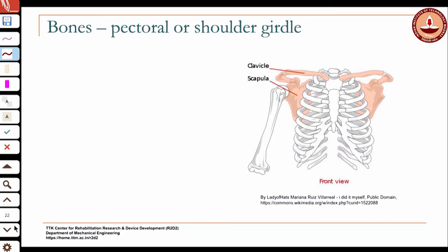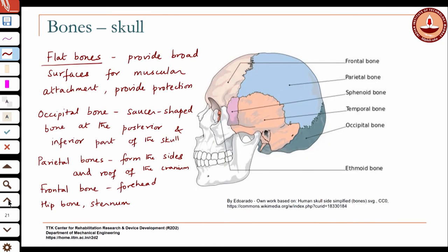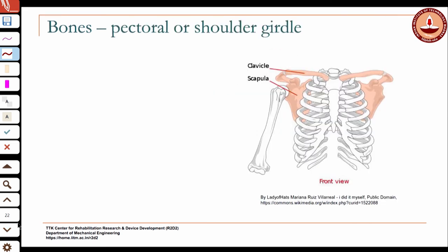Clavicle — what kind of bone is it? If you look at the girdle, we looked at the skull, which is mainly formed of flat bones. The clavicle would be a long bone. What about the scapula? The scapula would be classified as a flat bone.